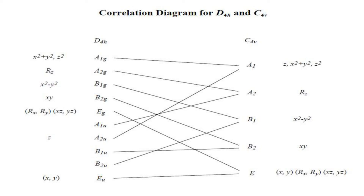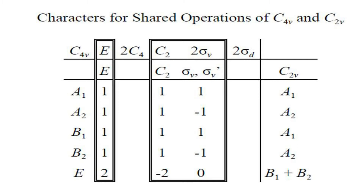Regarding degeneracy: in D4h, two two-dimensional representations are present — Eg and Eu — while in C4v only one two-dimensional representation exists, which is E. So the number of multi-dimensional representations is reduced. Degeneracy is more in D4h and less in C4v. We cannot say it is completely removed because a two-dimensional irreducible representation still exists and two functions are represented in parentheses, indicating the existence of degeneracy.